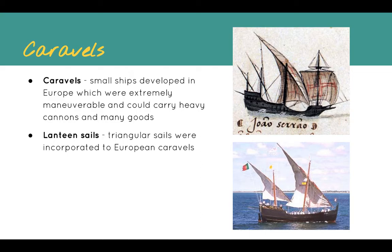One of the most important developments were the caravels — small ships developed in Europe that were extremely maneuverable and could carry very heavy cannons and many goods. They were very quick and excellent in battle, even though very small. So small, in fact, that when Vasco da Gama arrived in India, the traders there laughed at the size of his ships — they had seen great big ships from China four or five times larger than these caravels. But what they didn't know is that the caravels were extremely maneuverable, excellent in naval warfare, and carried heavy cannons which could do great damage to coastal cities and other ships.